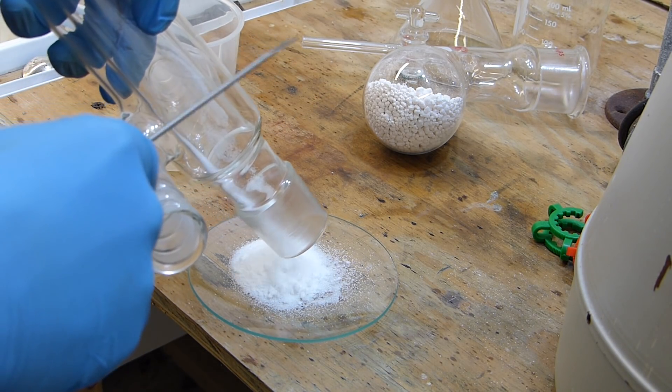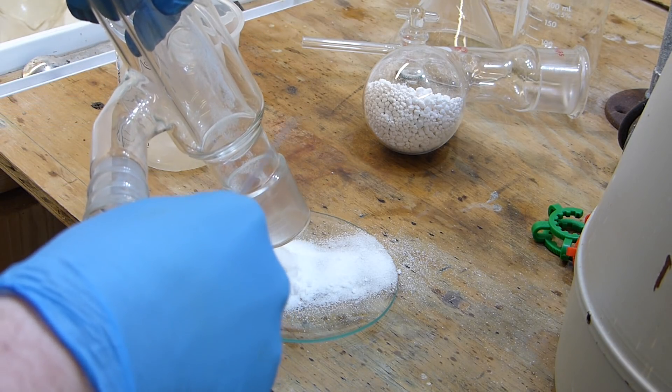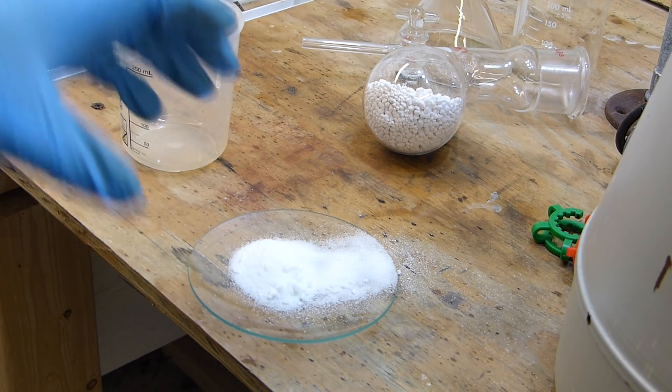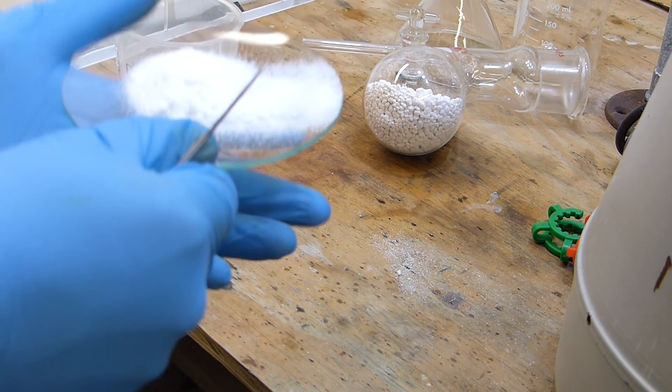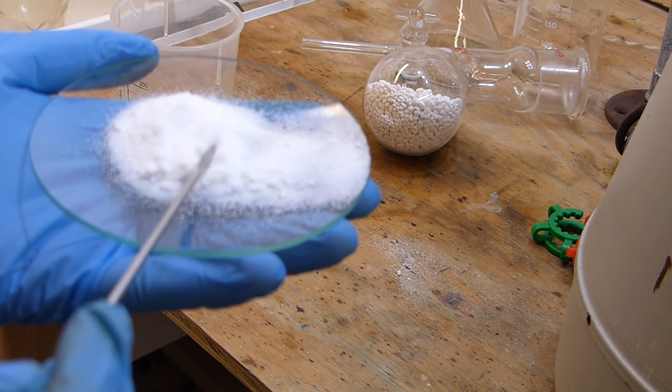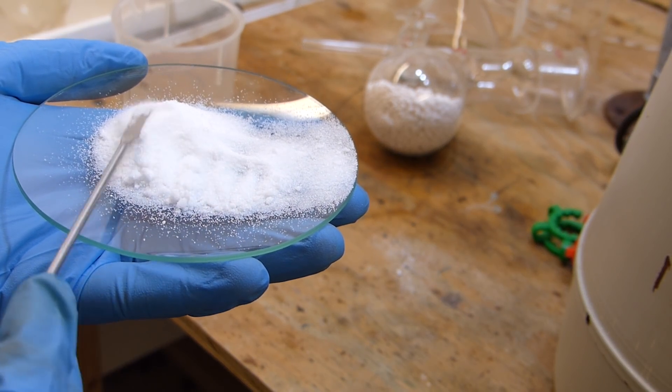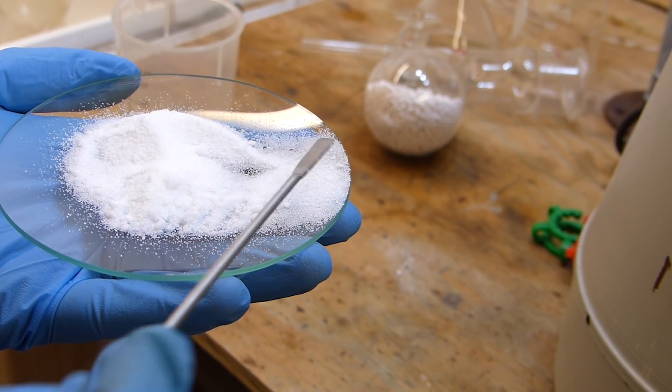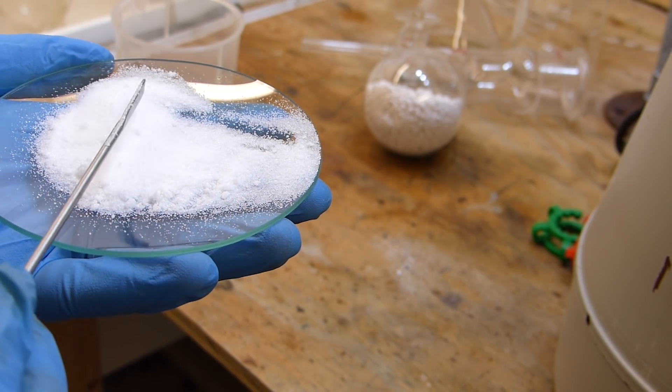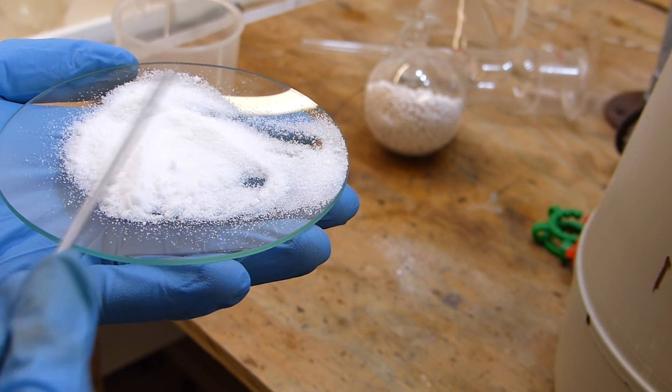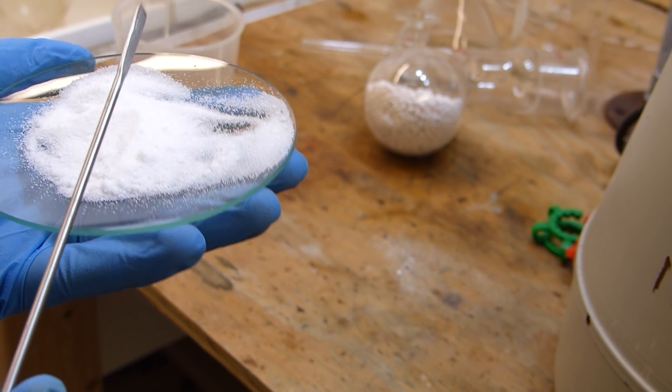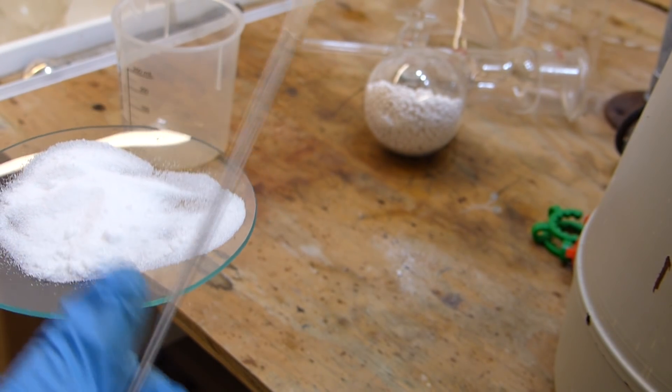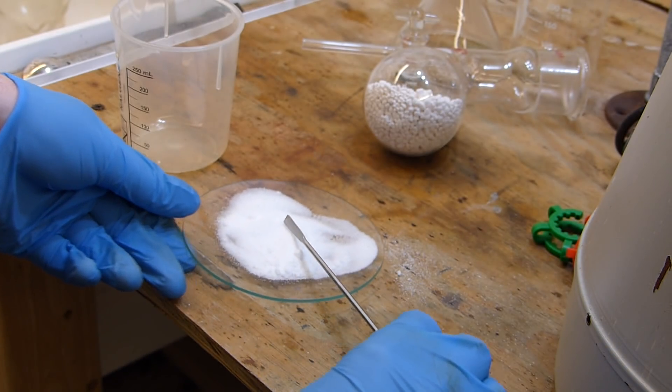Dump it out onto this watch glass just to see. It seems a lot more powdery. The clumps are definitely basically just disintegrating. They used to be pretty hard when I pulled it out of the jar there. So it's definitely lost some water. It seems a lot more free-flowing than it was. But again, we didn't really do a quantitative analysis here. It's more just qualitative, as a demonstration of glassware.